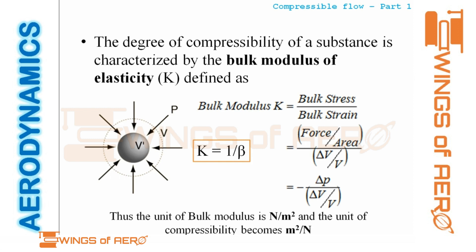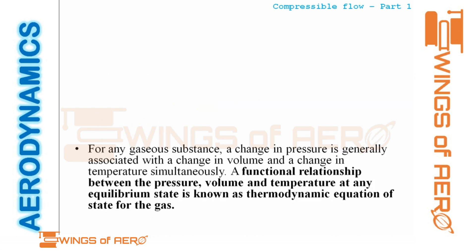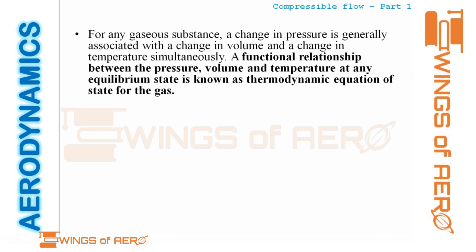The unit of bulk modulus is Newton per meter squared, and the unit of compressibility becomes meter squared per Newton. This is because in the expression dV/V, the meter cubed units cancel, leaving Newton per meter squared for the bulk modulus.